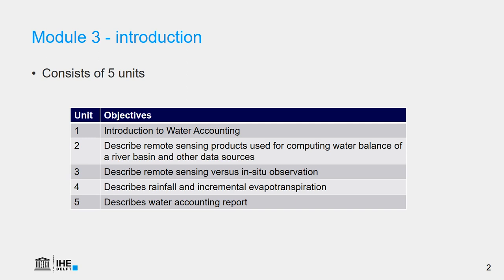Unit 3 discusses how we can compare remote sensing data with in-situ observations and infer reliability of remote sensing data used for water accounting. It also shows how to perform precipitation and evapotranspiration computation per land use or land cover classification. Unit 4 is about rainfall and incremental evapotranspiration. It describes the need to split evapotranspiration into its rainfall incremental components, and discusses the various methods used to split evapotranspiration. It provides an exercise where we use a soil moisture water balance model to split evapotranspiration.